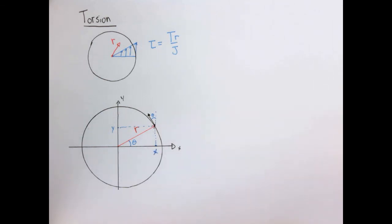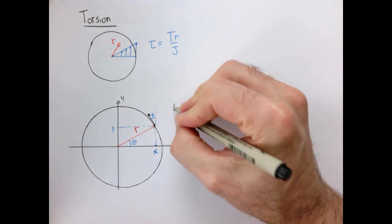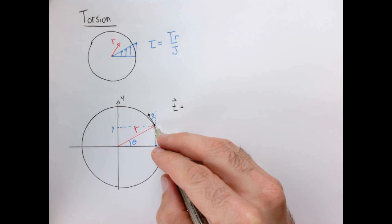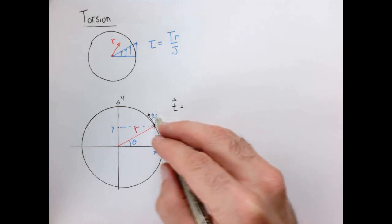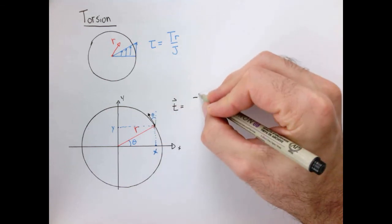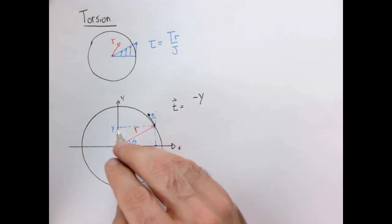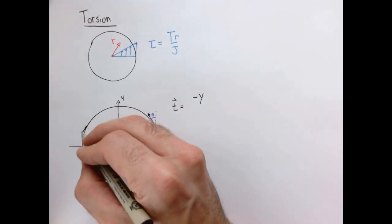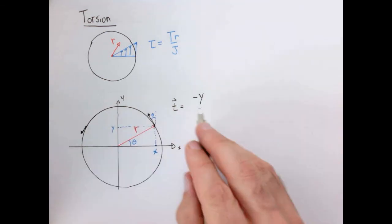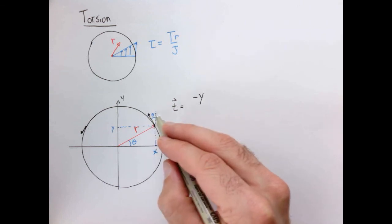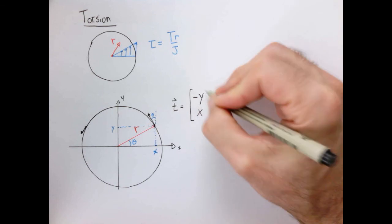So what does that mean? Our tangent vector — which I'll call small t with a line over it — is going to have an x component equal to this quantity. This quantity is the same as that quantity, so the x component of the tangent vector is going to equal y, with a minus sign because the x component points this way when y is positive. Likewise, the vertical component of that vector is the projection of the tangent vector on the y-axis, which is going to be related to x.